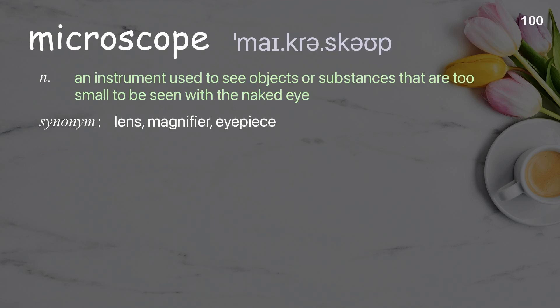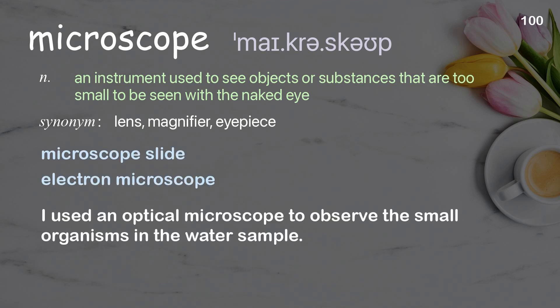Microscope: an instrument used to see objects or substances that are too small to be seen with the naked eye. Examples: microscope slide, electron microscope. I used an optical microscope to observe the small organisms in the water sample.